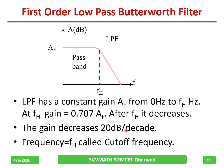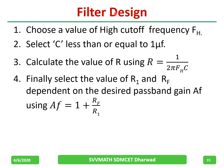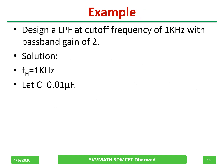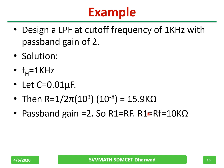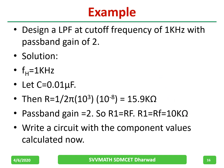The gain decreases at a rate of 20 dB per decade, and f_H is called the cutoff frequency. To design the filter: first choose the high cutoff frequency f_H, then select C less than or equal to 1 microfarad, calculate R using R = 1/(2π f_H C), and finally select R1 and Rf based on the desired gain (gain = 1 plus Rf/R1). For example, with f_H = 1 kHz and gain = 2: assuming C = 0.01 µF, R works out to 15.9 kΩ. For gain = 2, set R1 = Rf = 10 kΩ, giving 1 + Rf/R1 = 2.